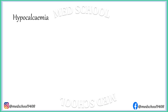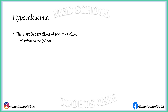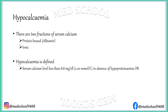Before understanding hypocalcemia, we should first know that there are two fractions of serum calcium. One is protein bound, where protein is mostly albumin, and second is ionic form. Hypocalcemia is defined as serum calcium less than 8.8 mg per deciliter or 2.2 millimole per liter in absence of hypoproteinemia, or ionic calcium level less than 4.4 mg per deciliter or 1.17 millimole per liter.